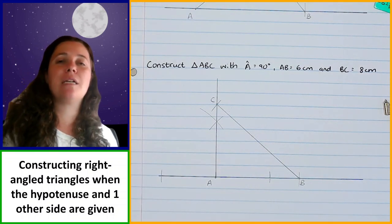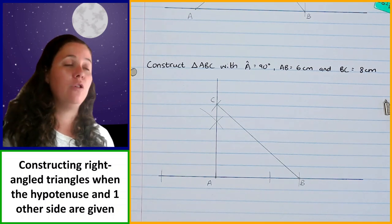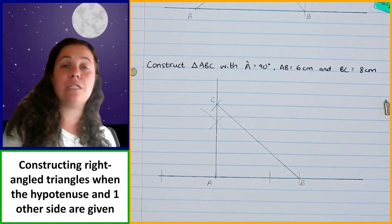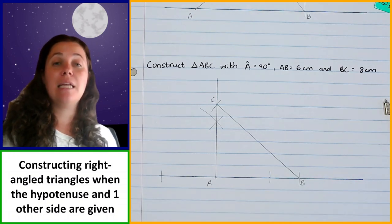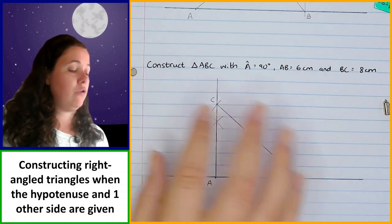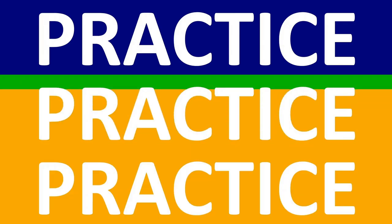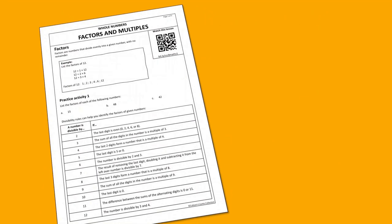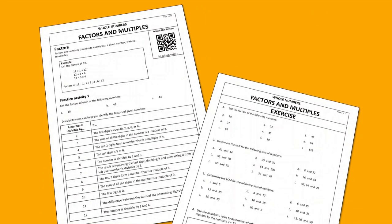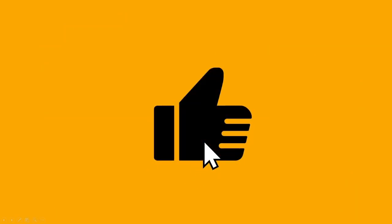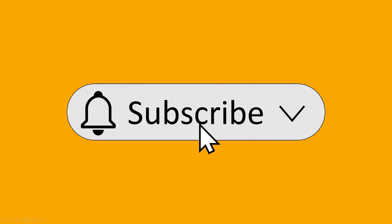So now we have learned how to construct triangles based on four different sets of information: you can construct a triangle where you've been given all three sides; where you've been given one side and two angles; where you've been given two sides and the included angle; and a right-angle triangle where you've been given the right angle, the hypotenuse, and one other side. Now that we've learned the concepts, it's important to practice, practice, practice. If you haven't already got the worksheet that goes with this video, you can find it by clicking on the link in the description. If you found this video helpful, please hit the like button, subscribe, and hit the bell to get notified about new lessons.